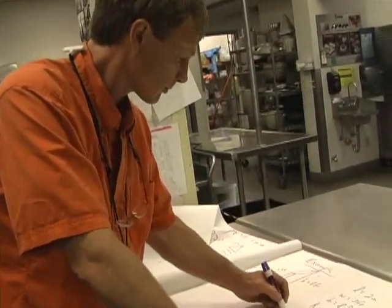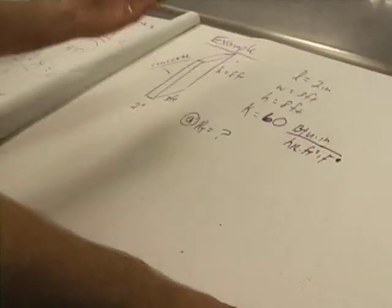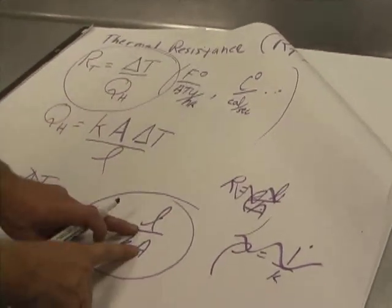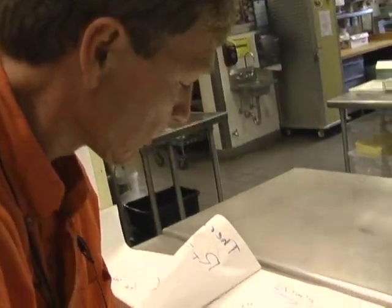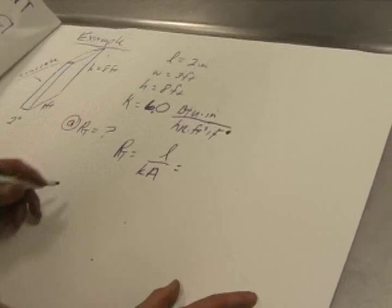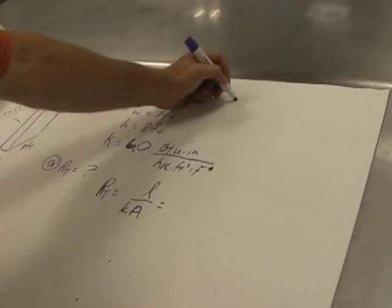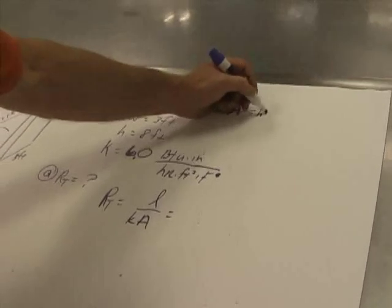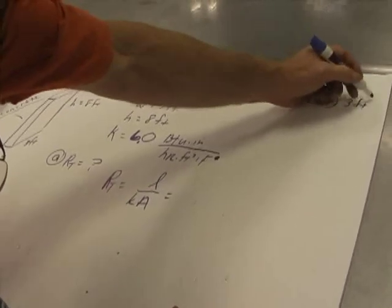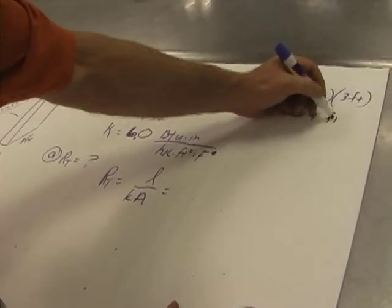Alright, so my first question is what's the thermal resistance. Now I don't have temperature difference, I don't have the heat transfer rate, so I can't solve for those. I can't use this equation, but I have everything I need for this equation. So I'll say the thermal resistance is the thickness over the conductivity over the area, which is - that's 6.0. Oh and the area, I've got to calculate this. The area is the height times the width, which is 8 feet times 3 feet, which is 24 square feet.